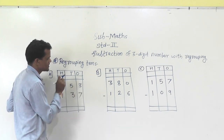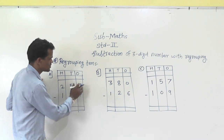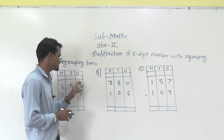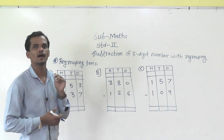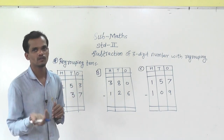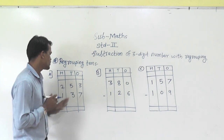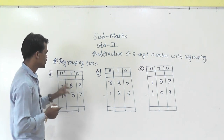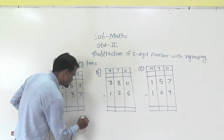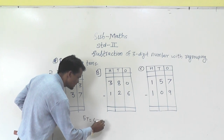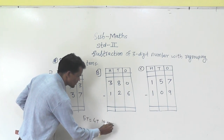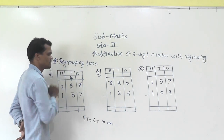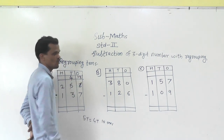First start from the ones place. 3 minus 7 is not possible because 3 is smaller than 7 — we can't subtract 7 from 3. So what to do here? You have to regroup this 5 tens into 4 tens and 10 ones. Write 4 right here, and the 10 ones add into these 3 ones, so you will get 13 ones.